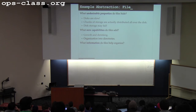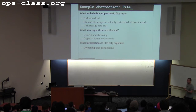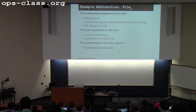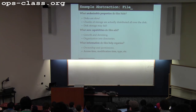Files also allow adding metadata — the disk doesn't know anything about ownership or permissions. These are illusions created by the abstraction that are useful when we access and manage files. Same with timestamps associated with files — that turns out to be pretty important for building a lot of other primitives. Abstractions do three things: hide undesirable properties, add new capabilities, and organize information.